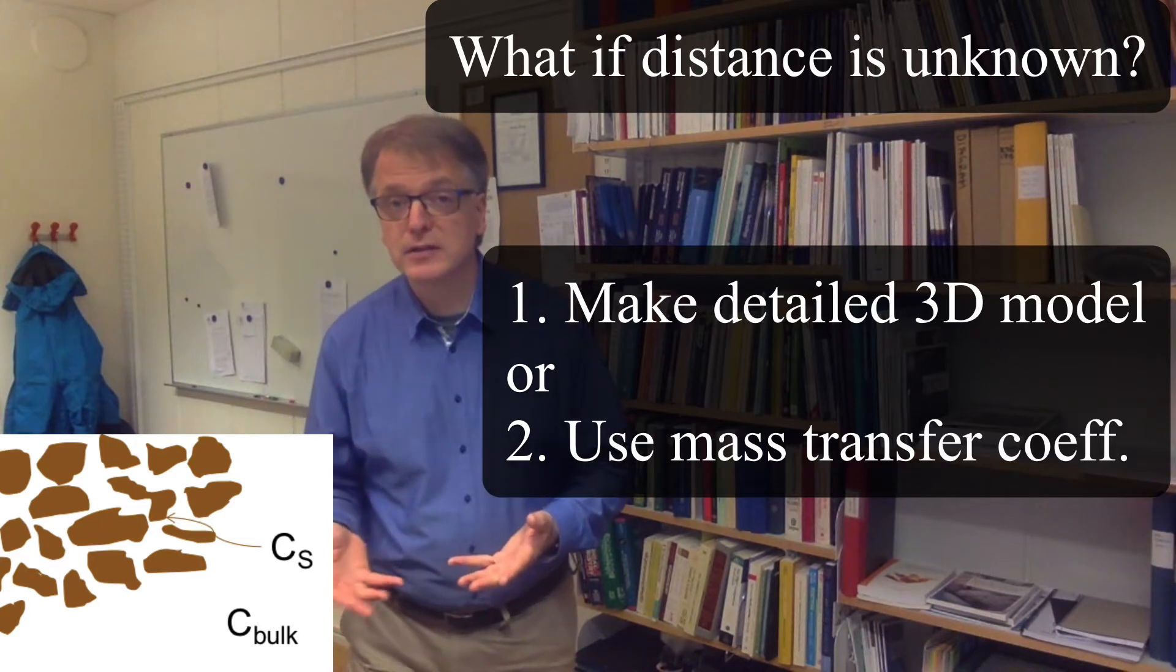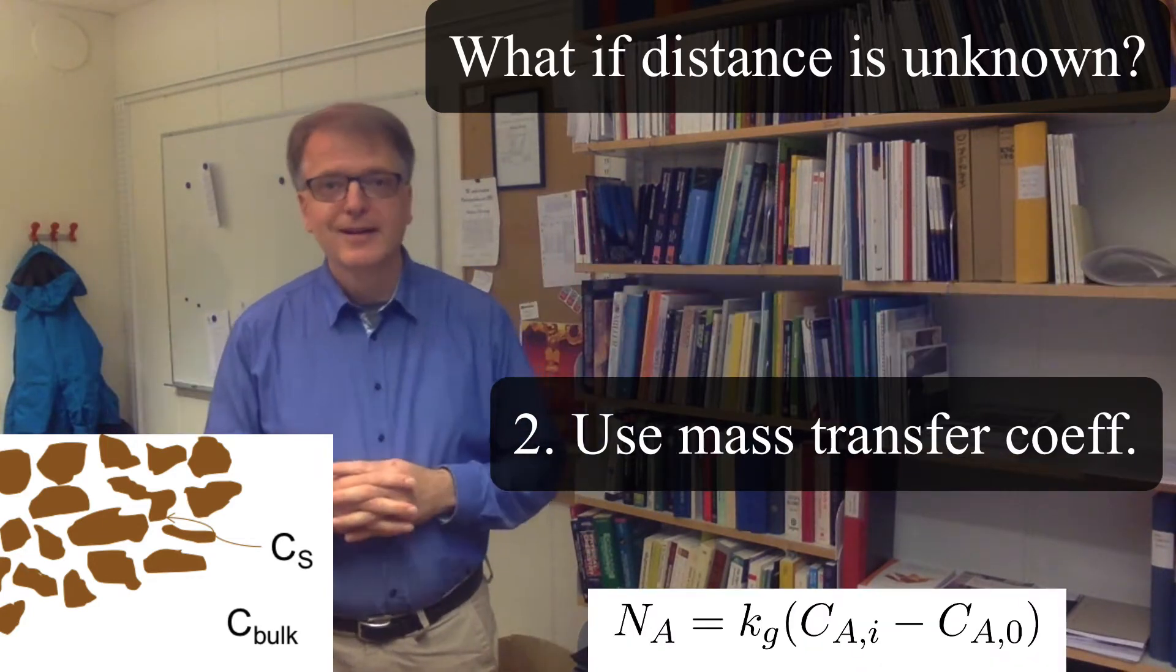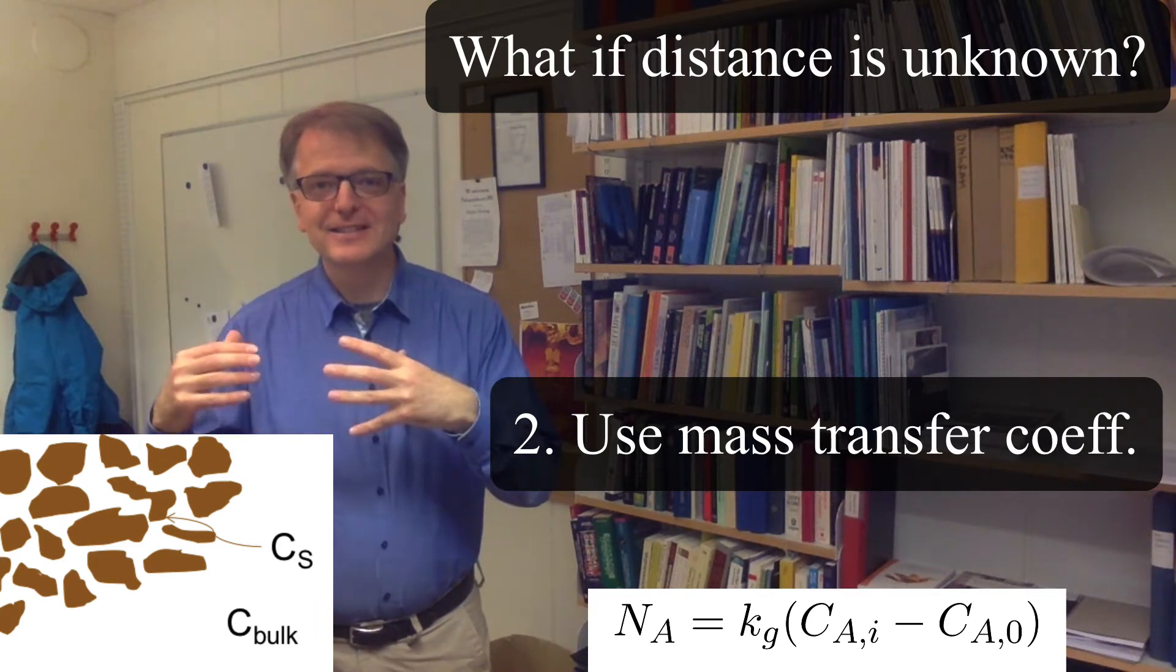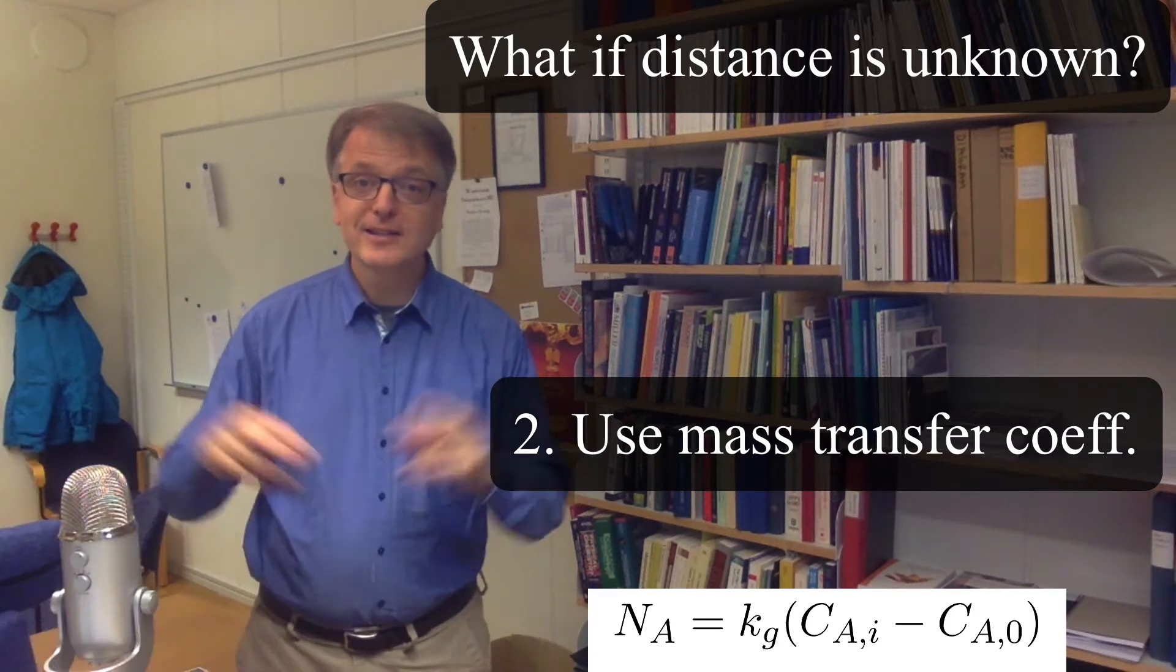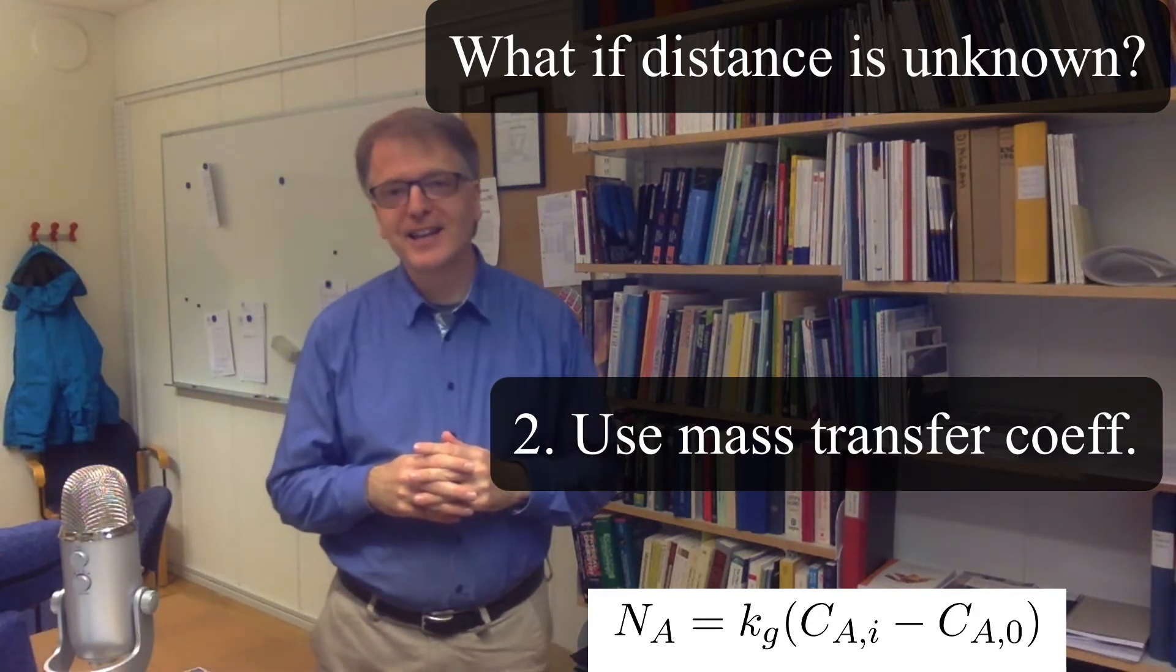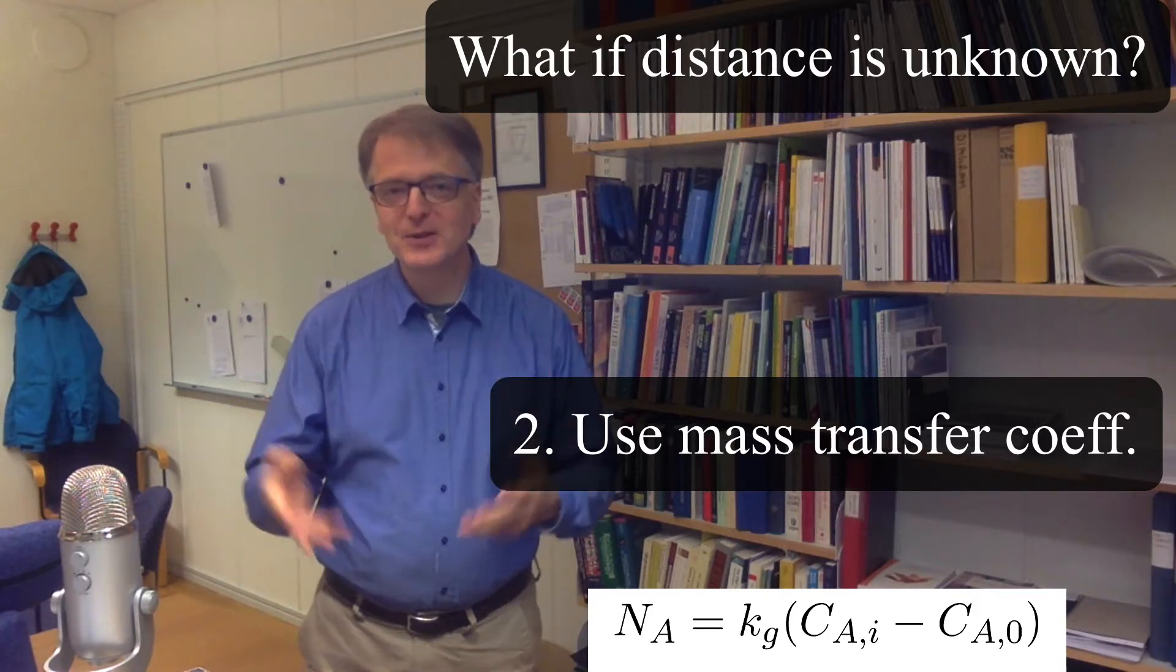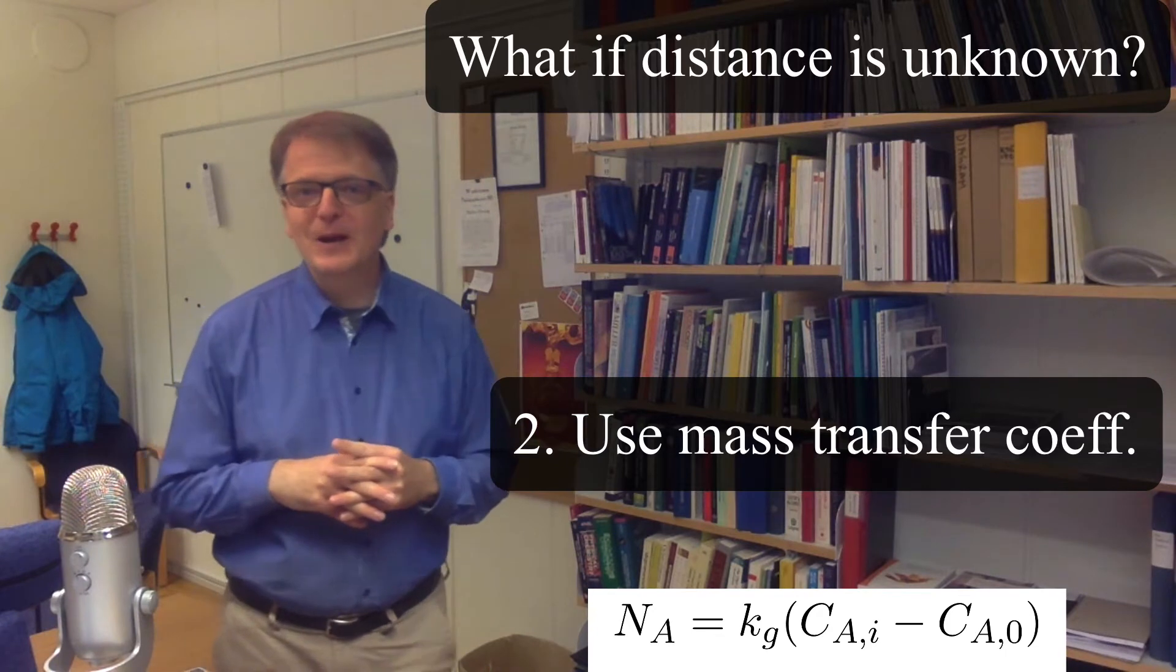A mass transfer coefficient is an empirical constant that relates a concentration difference to a mass transfer rate. I said it's a constant quote-unquote because it actually changes with conditions, so it changes with temperature. And you can figure out why, right?